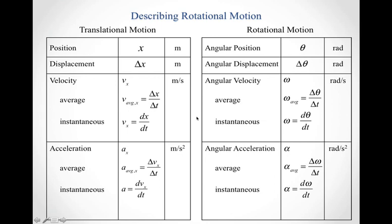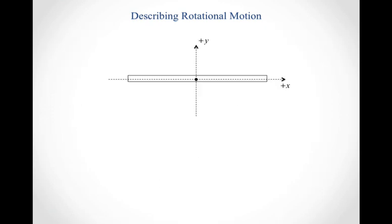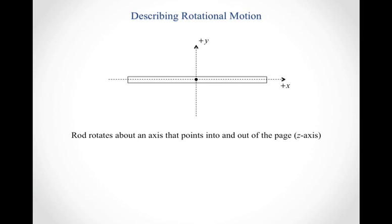Everything we used in describing translational motion maps over to rotational motion. One detail we emphasized is that for translational motion all of these quantities are vectors, and we want to think about their direction as well. If we have an object that's able to spin, as that rod spins it rotates about an axis — in this case, the axis points into and out of the page through the pivot point, lying along the z-axis.